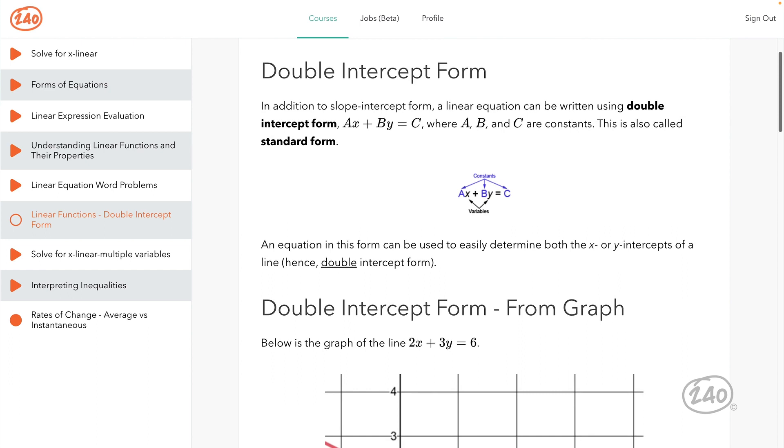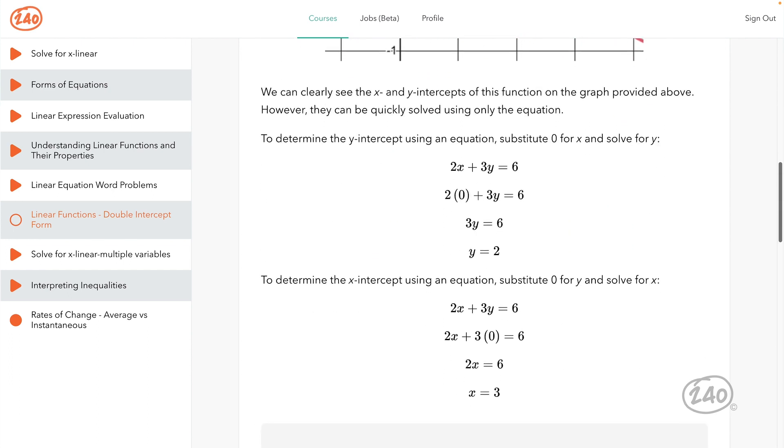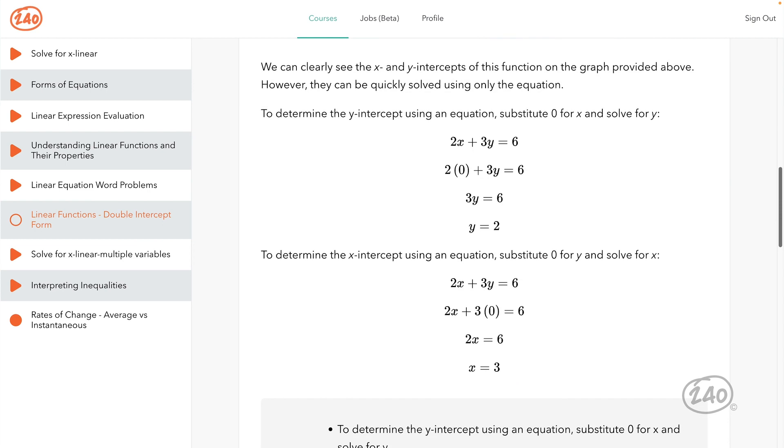First, we stack the equations and add them vertically to eliminate one variable. Then, we solve for the remaining variable. In this case, that's Y. Finally, we take that value and plug it in. And here we go. We find X.